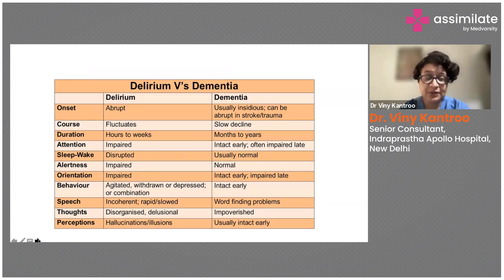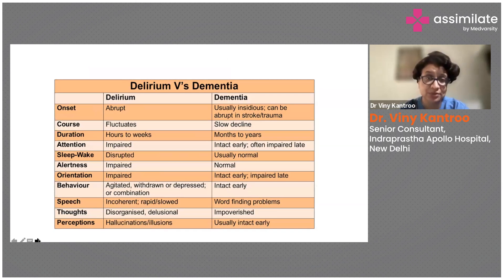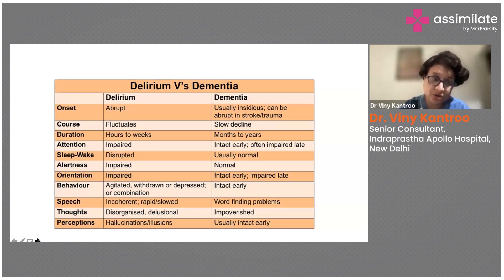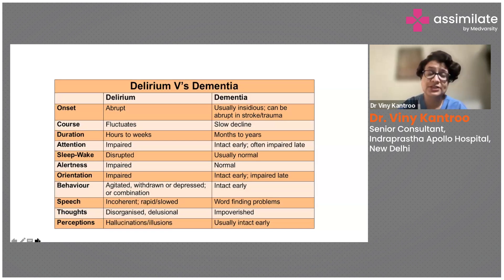Differentiating delirium from dementia is important and often confusing, since delirium is more common in elderly patients who may already have underlying dementia. Delirium has an acute or abrupt onset, whereas dementia is usually insidious — though it can appear abrupt in cases of stroke or trauma when an underlying condition was already present but unrecognized.